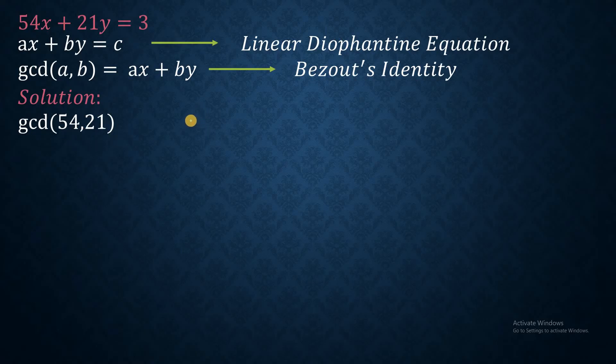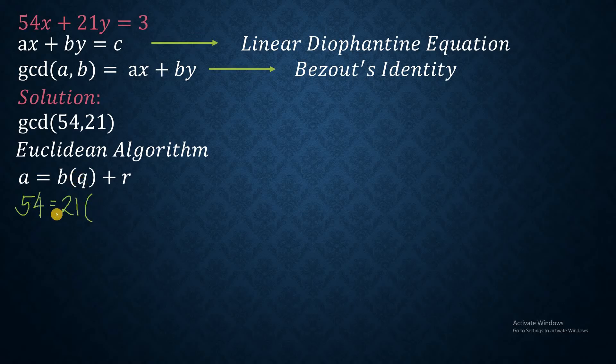To do this, it's always best to use Euclidean algorithm, where we make use of the division algorithm a equals b multiplied to q as the quotient plus r as the remainder. So this will be 54 is equal now to b, which is 21. Now the quotient of 54 and 21 would be 2, and its remainder would be 12. In this Euclidean algorithm, we will now keep on utilizing this division algorithm until we end up with the r value of 0.